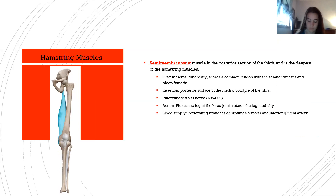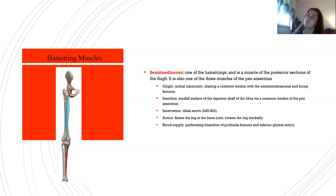The semimembranosus is the deepest of the hamstring muscles in the posterior thigh. Origin: ischial tuberosity, sharing a common tendon with semitendinosus and biceps femoris. Insertion: posterior surface of the medial condyle of the tibia. Innervation: tibial nerve L5–S2. Action: flex the leg at the knee joint and rotate the leg medially. Blood supply: perforating branches of profunda femoris and inferior gluteal artery.